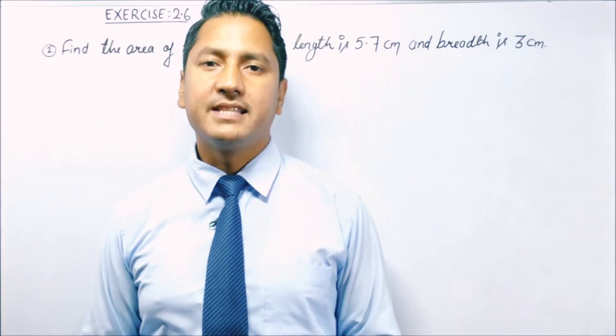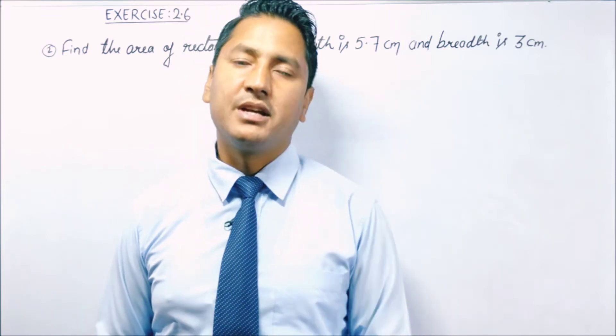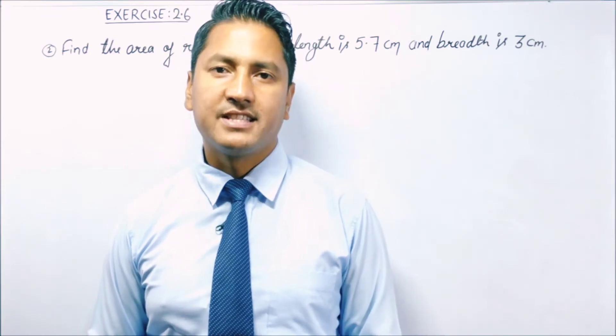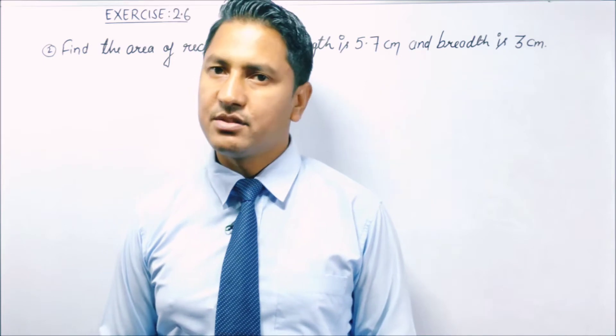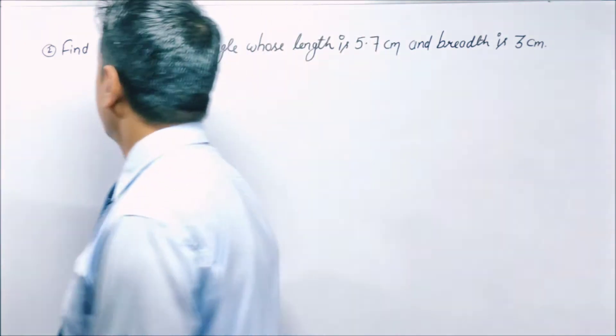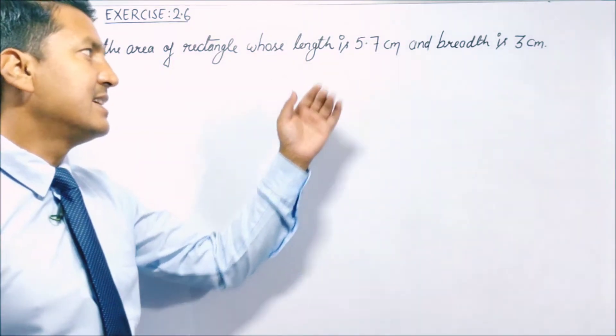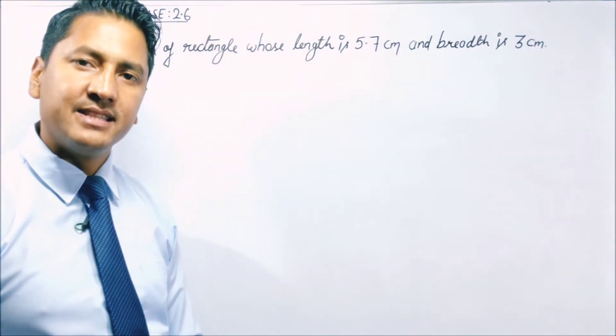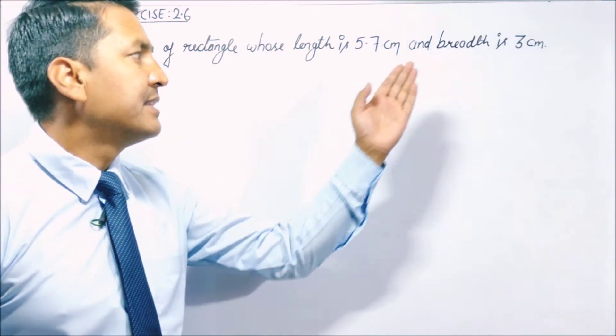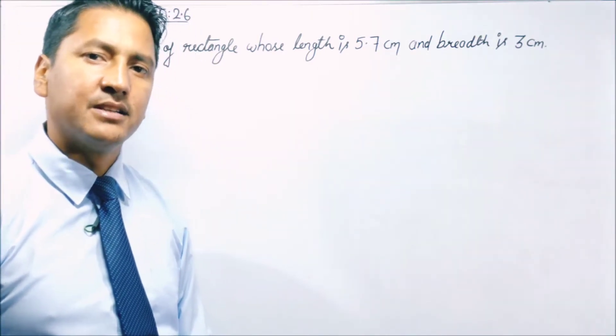Hello everyone, this is Rajin Negi. Now coming to question number 2 of Exercise 2.6. What is the question? Find the area of a rectangle whose length is 5.7 centimeter and breadth is 3 centimeter.